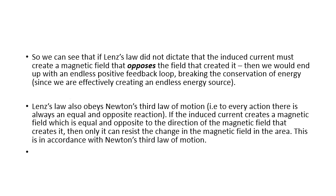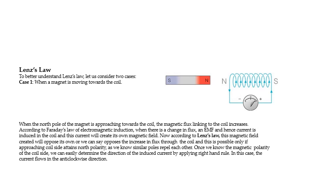Lenz's law always satisfies conservation of energy and can be explained using this. Once again, to better understand, consider the case when a magnet is moving towards the coil. The north pole is approaching the coil and the magnetic field linking with the coil increases. According to Faraday's law, electromagnetic induction takes place where there is a change in flux, and this will induce an EMF and a current in the coil. The current will create its own magnetic field, and this will oppose the changes.